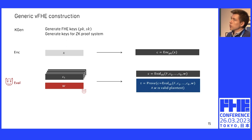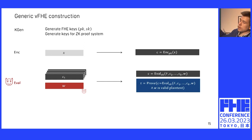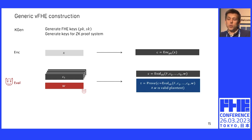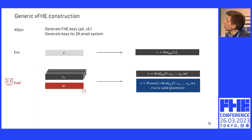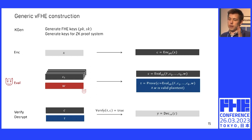We also looked at some extensions. For example, if you use a zero-knowledge proof, you can actually hide the server input from the client, which fits nicely with the function privacy definition of FHE. You can also add additional checks on the plaintext input from the server — for example, you can prove that the server input opens to a previous commitment made earlier in the protocol, or you can prove that W satisfies some other application-specific properties. Finally, at the end of the protocol, the client just verifies that the tag and the ciphertext match and then does the FHE decryption.